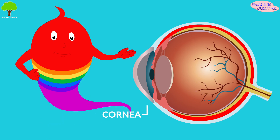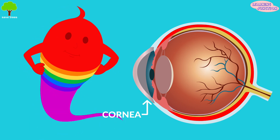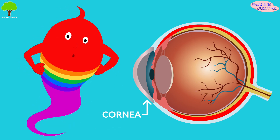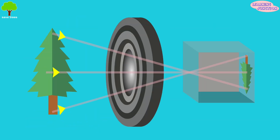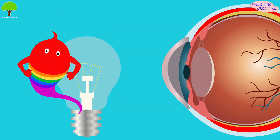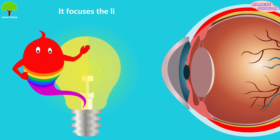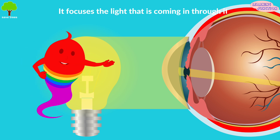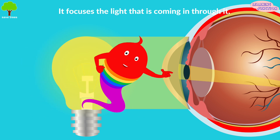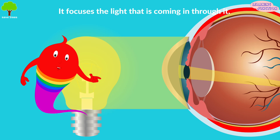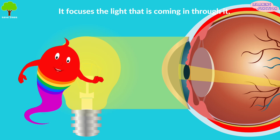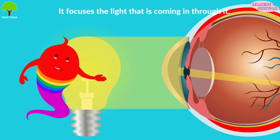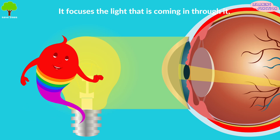Cornea. This is the layer that covers the front of the eye, and it acts like a camera lens. It focuses the light that is coming in through it, and with the lens it makes sure that the image that reaches the back of the eye is in focus.